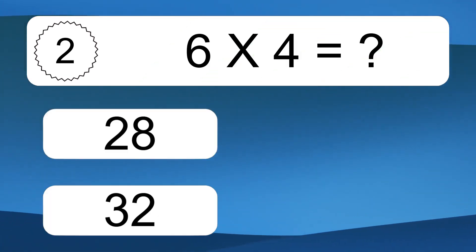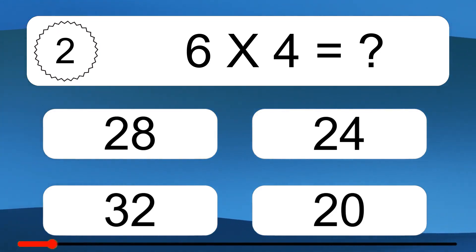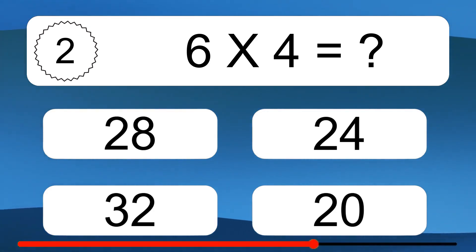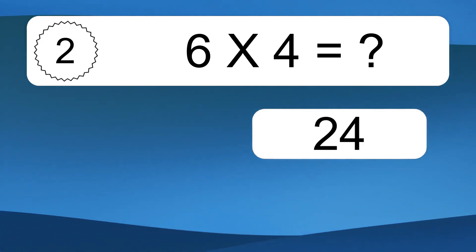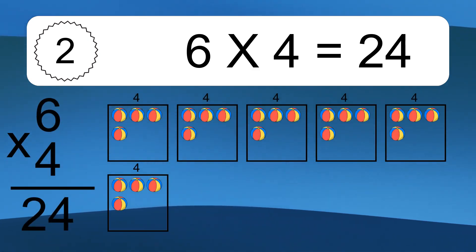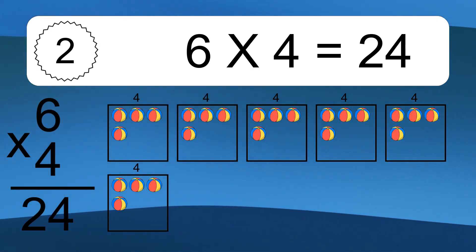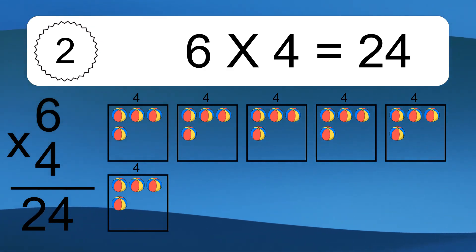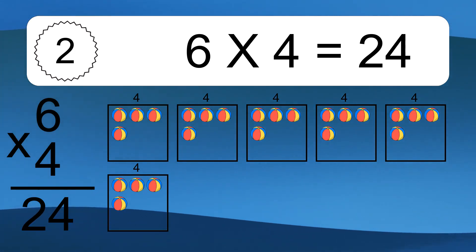Six times four equals what? Six times four equals 24. We have six boxes, and each box has four colorful balls inside. If you count all the balls in all the boxes together, you will have six times four balls. This equals 24 balls.